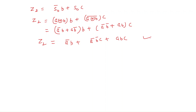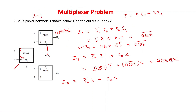We have seen the expressions for Z1 and Z2. To solve this problem, we first found Z0, which acts as the select line to the next two multiplexers, and then derived Z1 and Z2. Thank you very much for watching this video. See you in the next video.